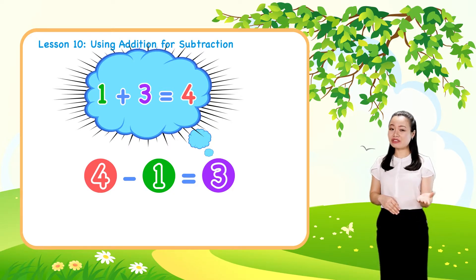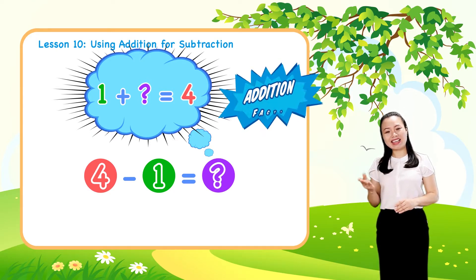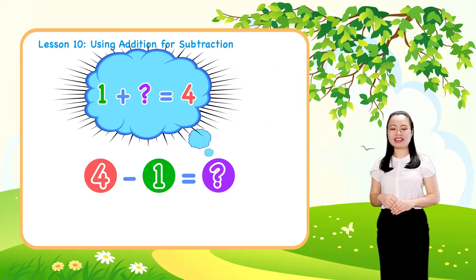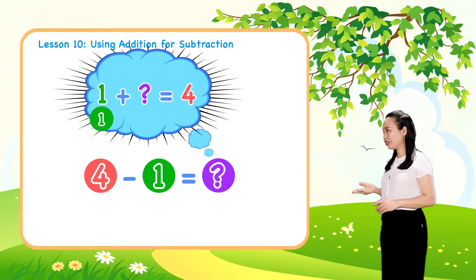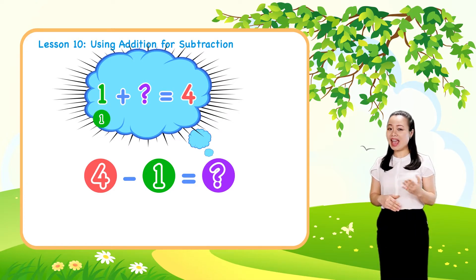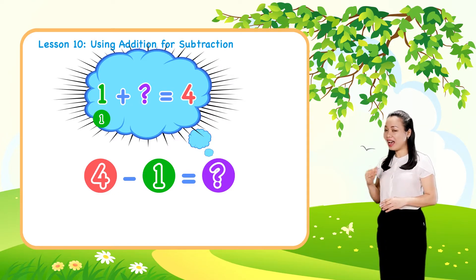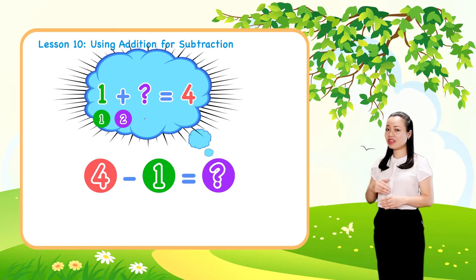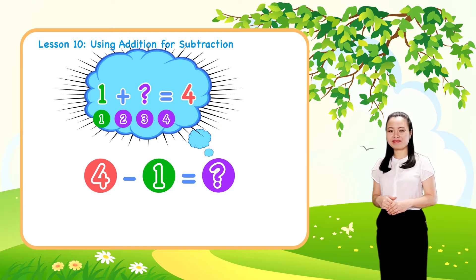If you don't memorize the addition facts, it may take you longer. For example, you may have to draw 1 dot, then draw and count on 1 dot until you get 4. Let's draw and count on 2, 3, 4.